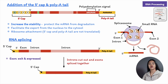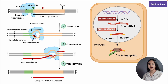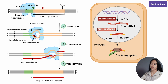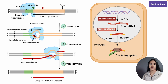Once an RNA transcript has been spliced and both ends have been modified, the RNA is now a functional mRNA molecule. Only correctly processed mRNAs are exported to the cytosol, mediated by nuclear pore complexes, which connect the nucleoplasm with the cytosol and act as a gate controlling which molecules can enter or leave the nucleus. Incompletely processed RNAs remain in the nucleus and are degraded there. Each mRNA molecule is eventually degraded in the cytosol.